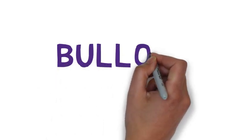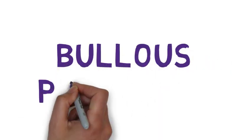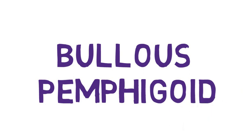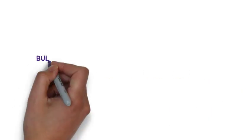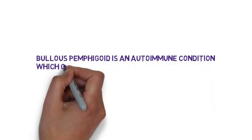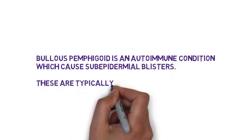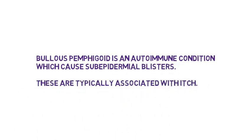Hi guys, it's Ms. Mabic here and today I'm going to talk about Bullous Pemphigoid. Bullous Pemphigoid is an autoimmune condition which causes sub-epidermal blisters, and these are typically associated with a very severe itch.